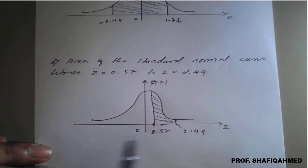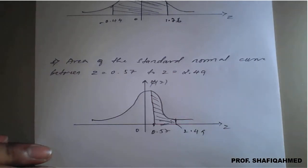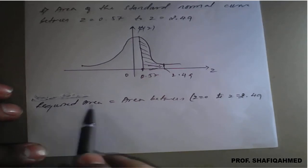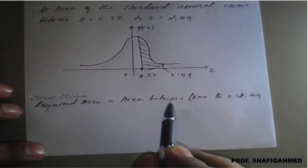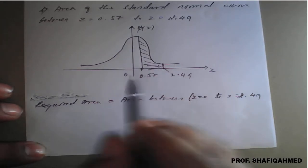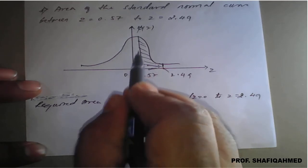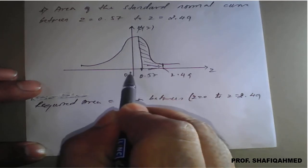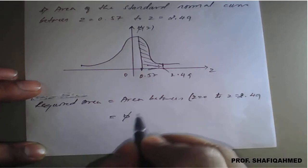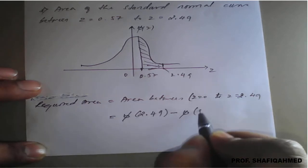To find this area, we need to conclude how to calculate the complete shaded region. Required area equals the area between z equal to 0 and z equal to 2.49 on the right-hand side. To get this unshaded part subtracted, we calculate φ(2.49) minus φ(0.57).